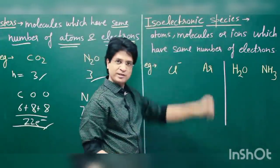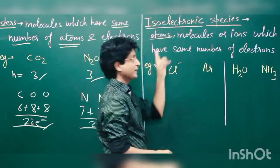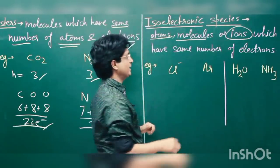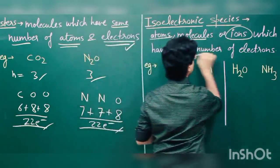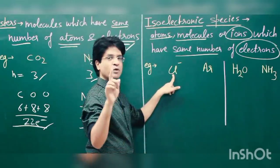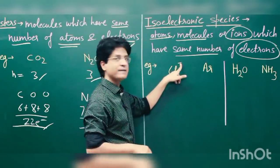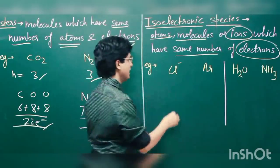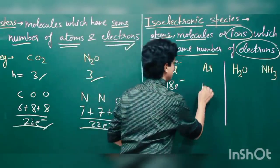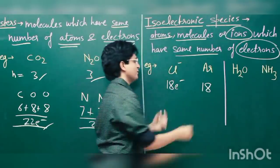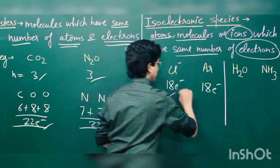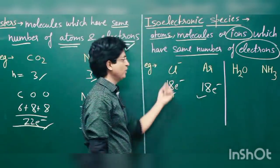Isoelectronic species are atoms, molecules, or ions which have the same number of electrons. Even ions can qualify. For example, Cl⁻ has 17 electrons plus one extra (from the negative charge) giving 18 electrons. Argon has atomic number 18, so 18 electrons. Both chloride ion and argon have 18 electrons — they are isoelectronic.